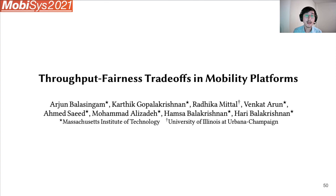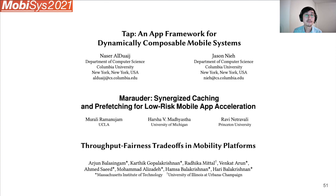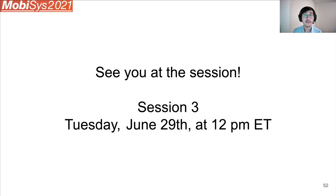So that's our last paper. These are the three papers for Session 3: TAP, Marauder, and Throughput Fairness Trade-offs. I hope you join us to watch the videos and enjoy the talks. The session is on Tuesday, June 29th at 12 p.m. Eastern Time. See you at the session. Thanks.